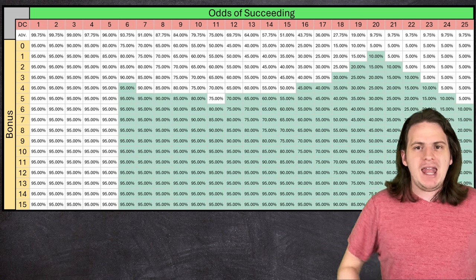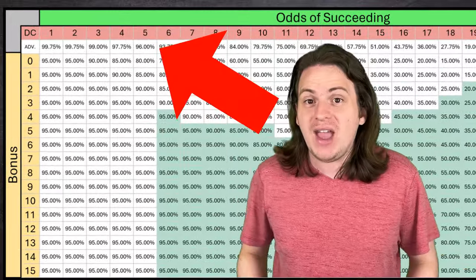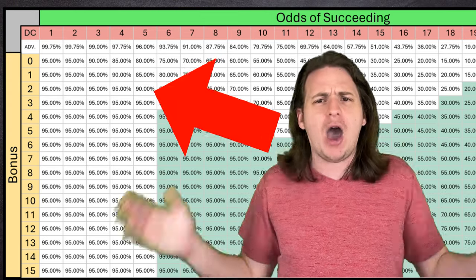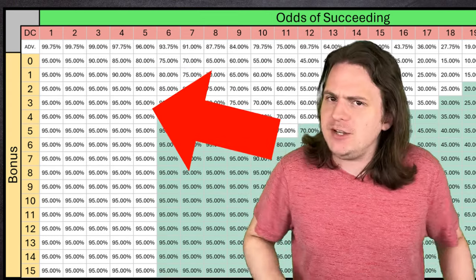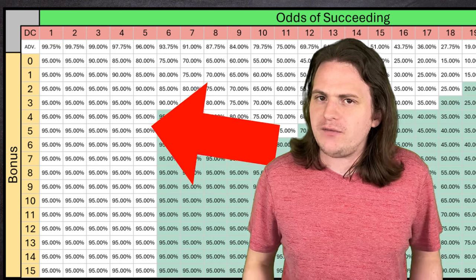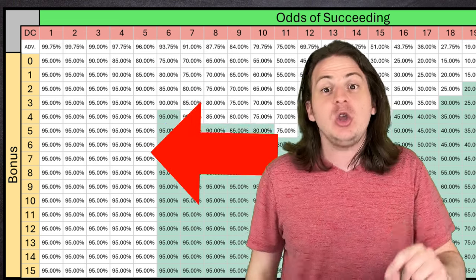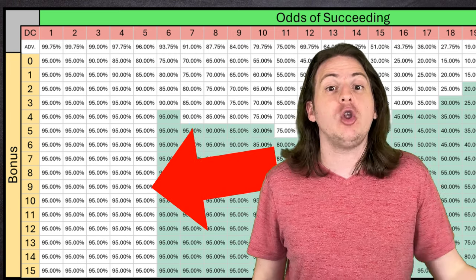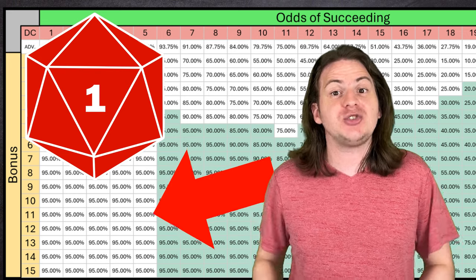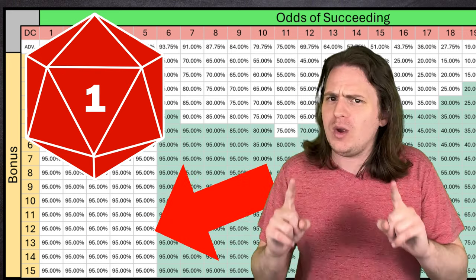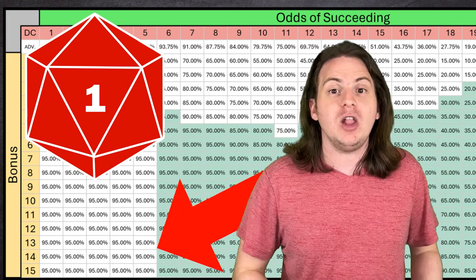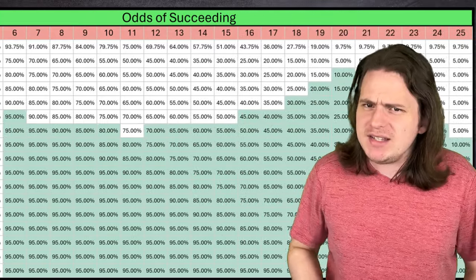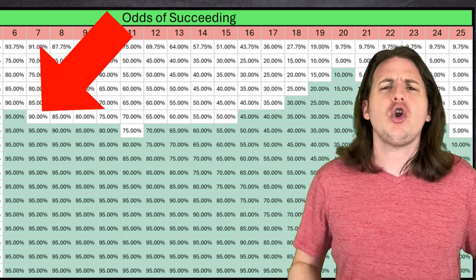To start, if your difficulty is anywhere from 1 to 5, it's statistically better to have advantage every time, no matter how high your bonus is. Now difficulties like these don't come up very often, but in the rare cases when they do, you've always got a 5% chance to roll a 1 and critically fail with just one die, but a very low chance to roll that low with both dice. But starting at a difficulty of 6, we see this kind of strange curve pattern.